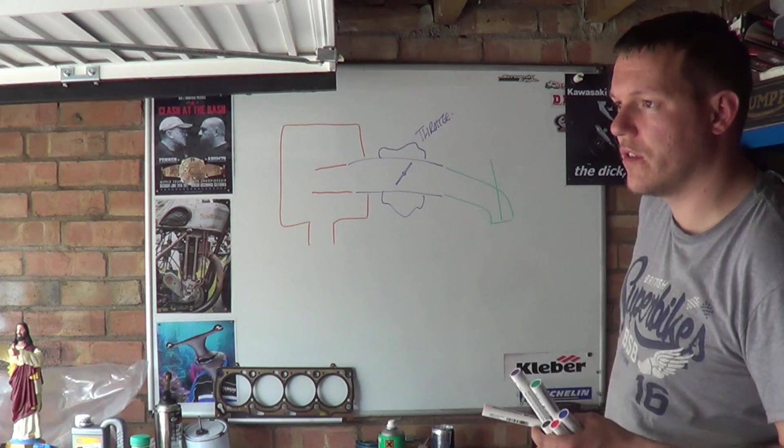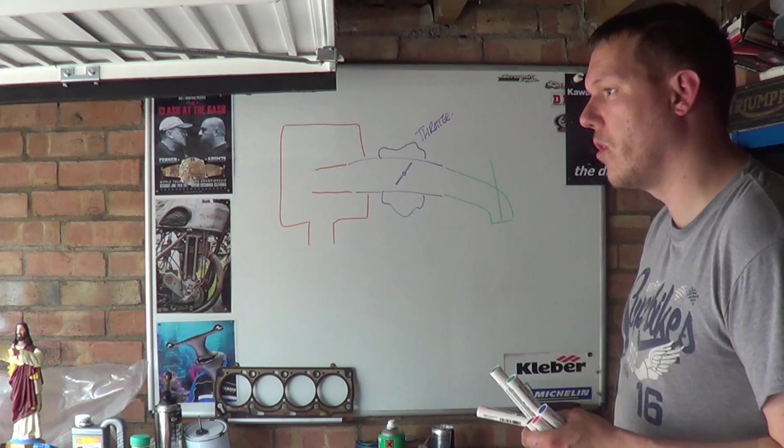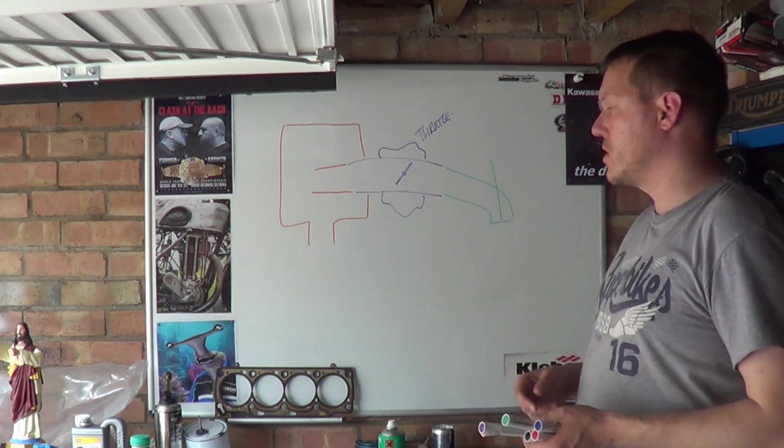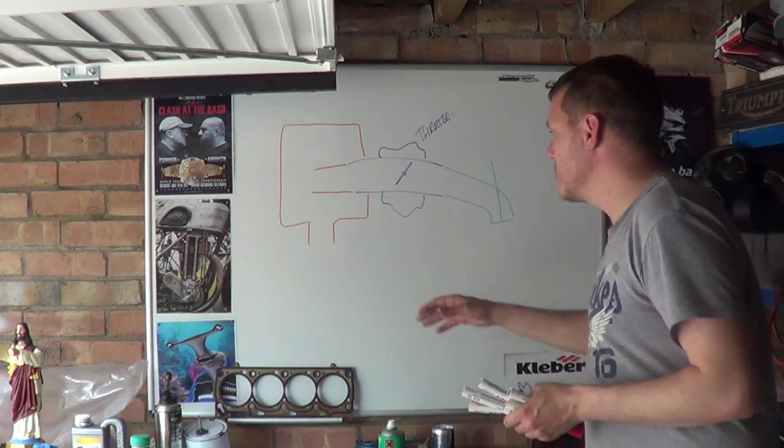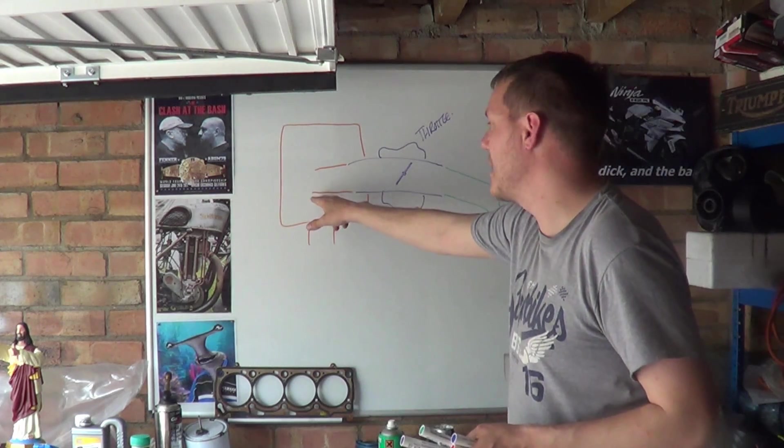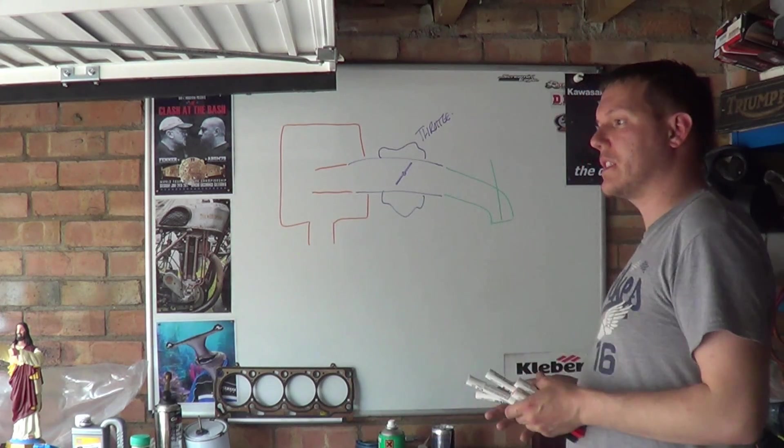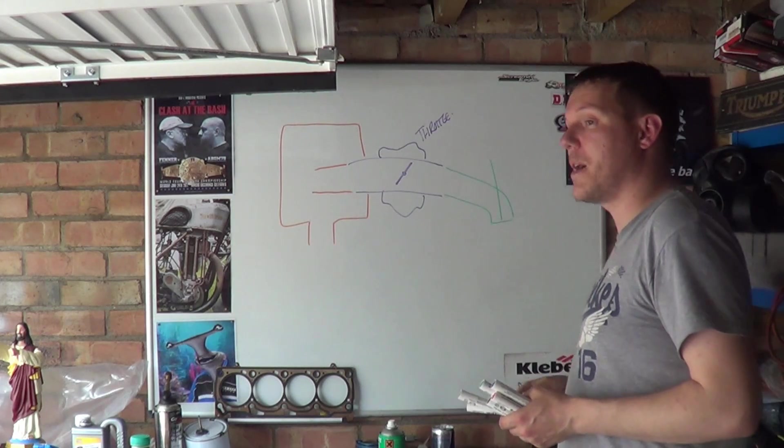We're going to do an entire series actually on airboxes and why they're important and all the different resonances and so on and so forth. But with a system like this your runner length, this entire length here, your tract length is fixed, which is a problem because RPM is not fixed.